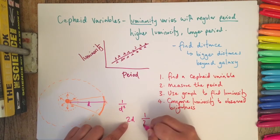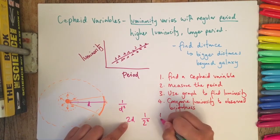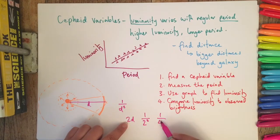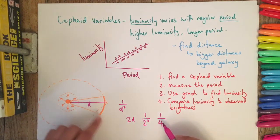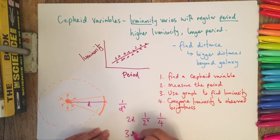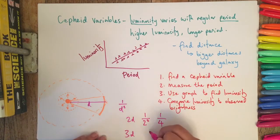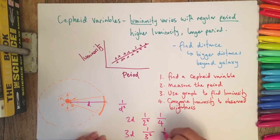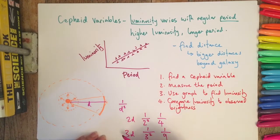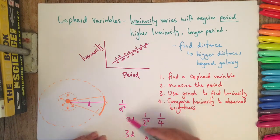If we had three lots of d, three times the distance, it would be 1 over 3 squared, so it would be a ninth of what you had originally. This shows us...